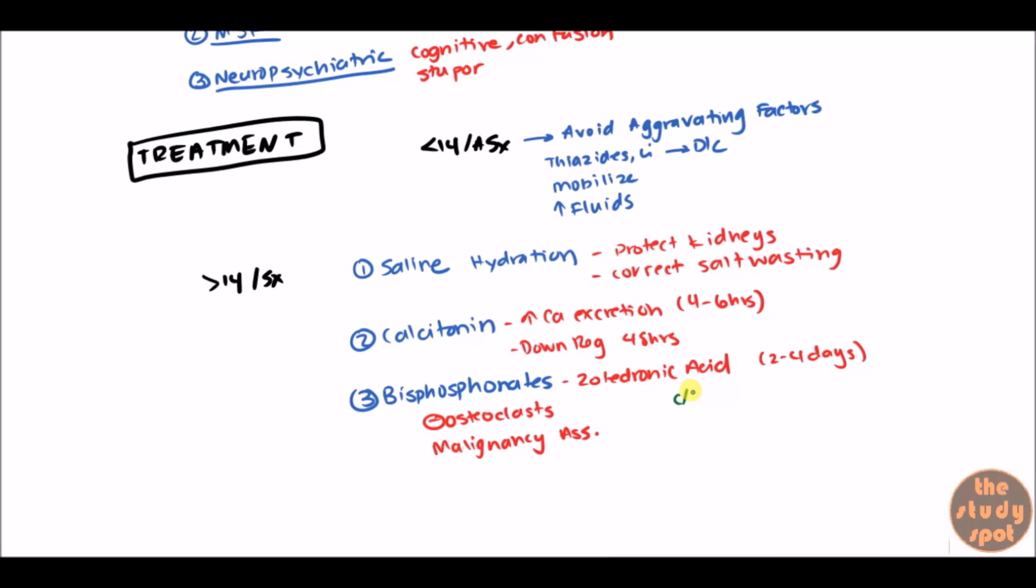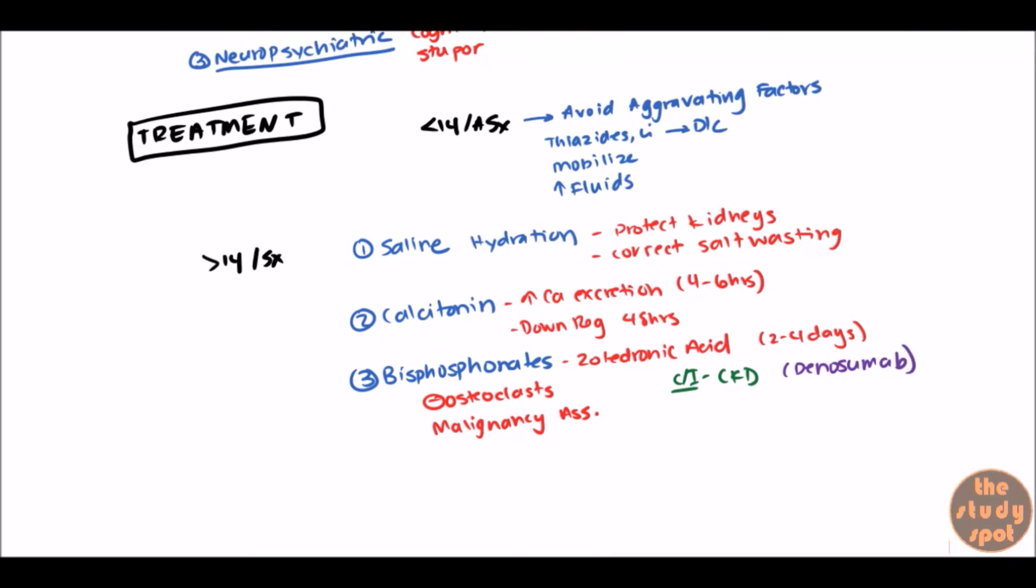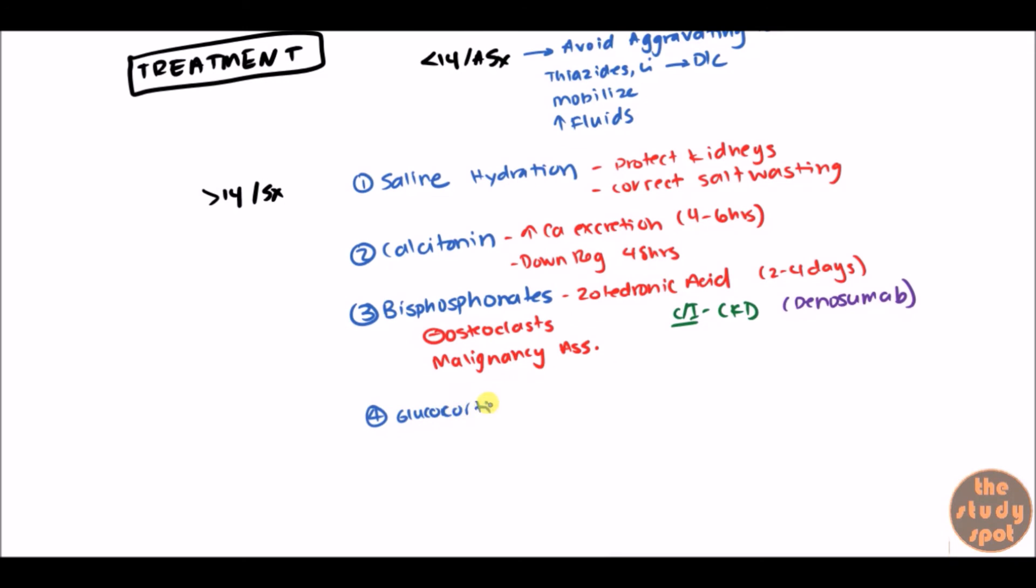And for these patients, we prefer to give denosumab. Denosumab, if you're not familiar with, is an antibody against RANK L. And RANK L also can increase osteoclast. And so this will inhibit that. Besides that, other types of treatment, you can give glucocorticoids if it's a granulomatous disease. Because remember, in granulomatous disease, it's the macrophages that are the issues. They're kind of activating vitamin D. So a decrease in macrophages definitely helps. Cinacalcet is a calcimimetic. And so what this does is it makes the parathyroid believe that there's more calcium than there actually is. And so this is definitely used for parathyroid carcinomas and parathyroid related diseases.